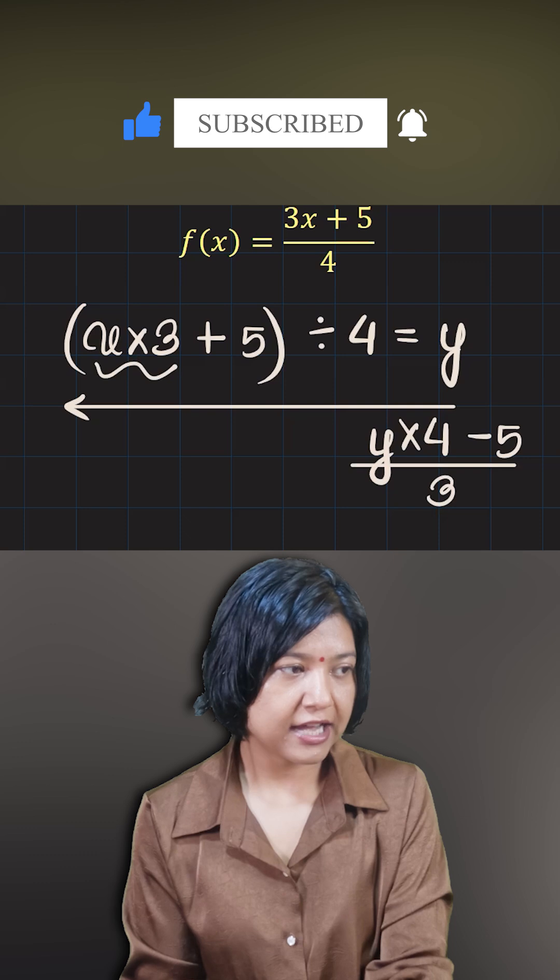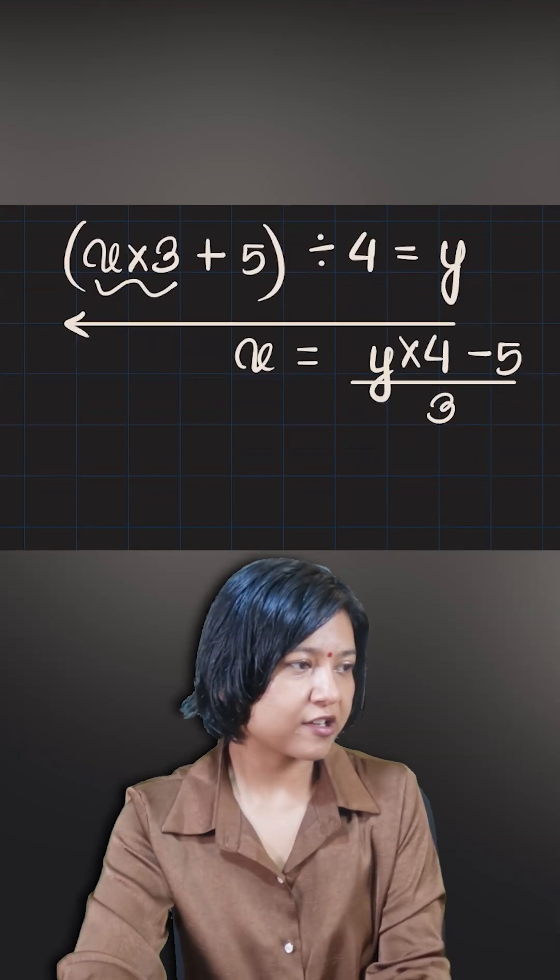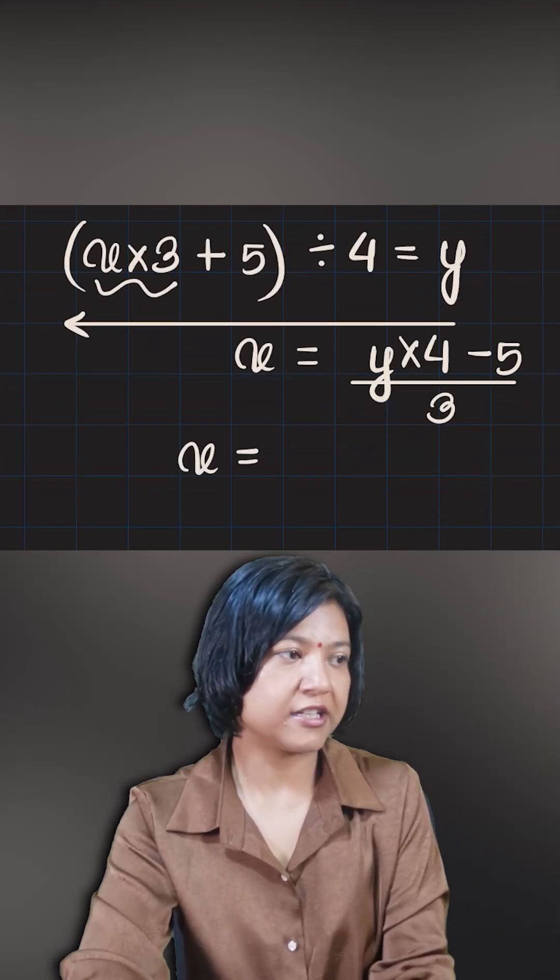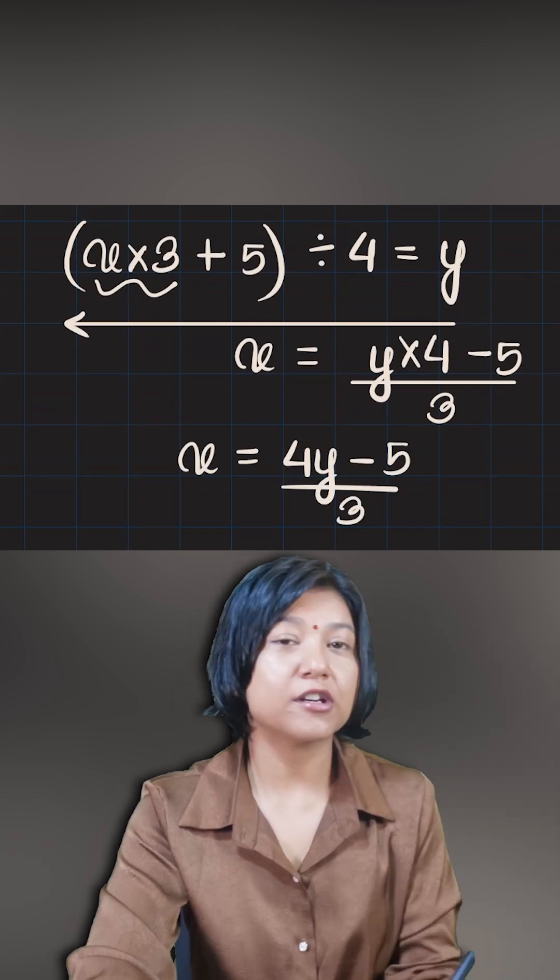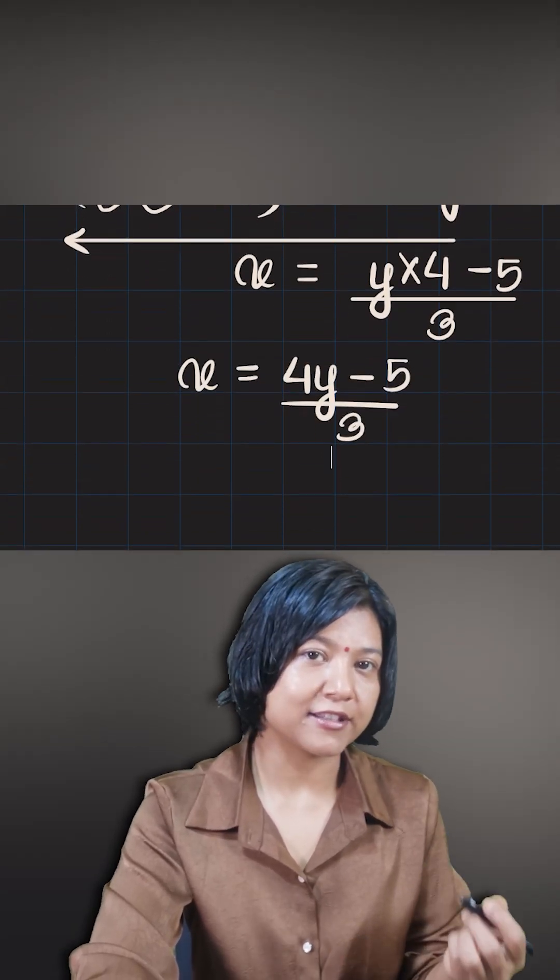So this gives me the output x. Thereby you got the answer: x equals the new output for the inverse function, which will be 4y minus 5 upon 3. Note that the standard output is always y and the input is always x.